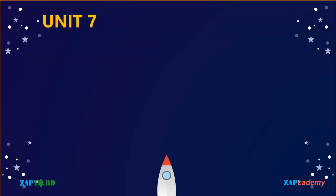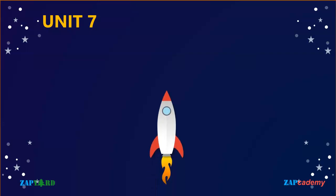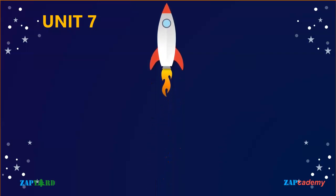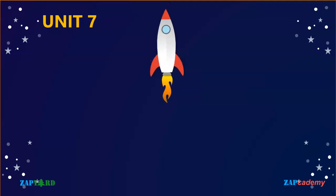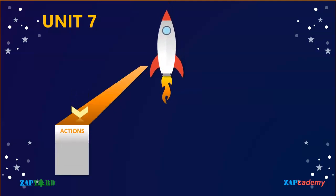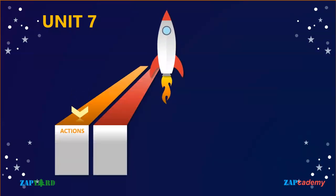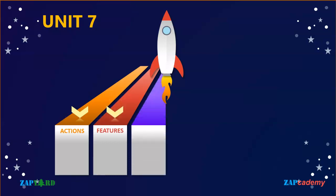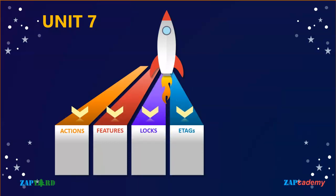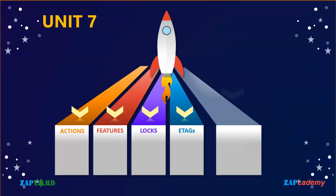In Unit 7, participants will learn the nitty-gritties of actions, features, lockings, and e-tags. These are topics and skill sets needed in every RAP project, so if you want to contribute to projects hands-on, these topics have to be mastered. The trainer will also cover numbering — both early and late numbering — in RAP.